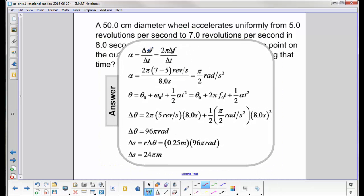So first we have to find alpha. We need the acceleration, which is the change in angular velocity over time. We're not given the angular velocity, but we are given the frequency, so we use this equation. Omega is 2 pi f. We plug in the numbers, and we get pi over 2 radians per second squared for the angular acceleration.